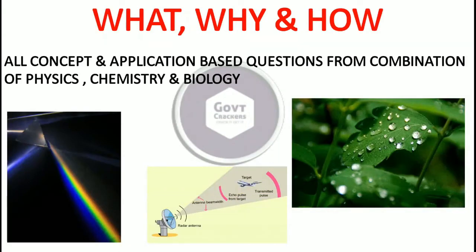Questions always come in the form of what, why, and how, where you are given multiple options and need to find the correct answer through elimination or assertion. These can be a mixture of chemistry, physics, and biology. Topics from which questions are asked include: how radar works, working principle of aeroplanes, principles involved in helicopters, night vision glasses, air pollution detectors, cooking, photocopies, and color painting.